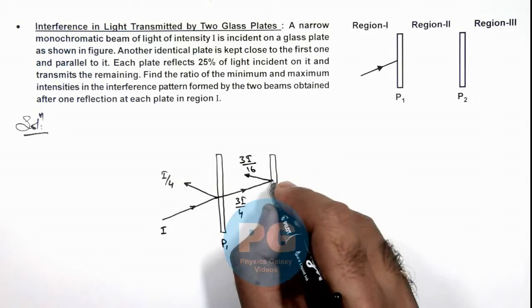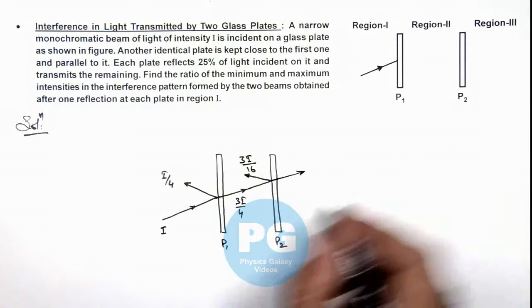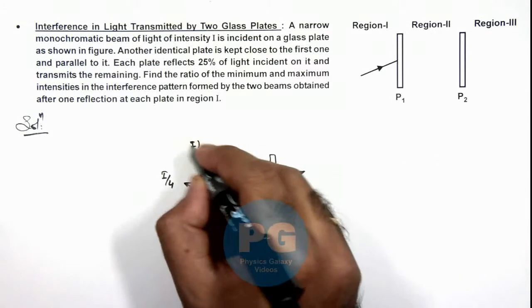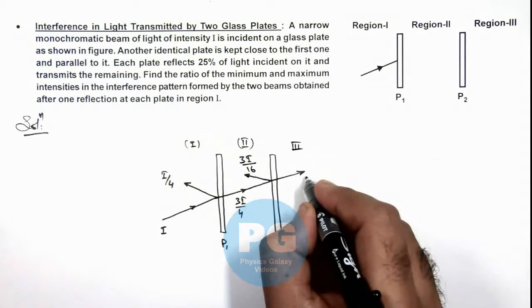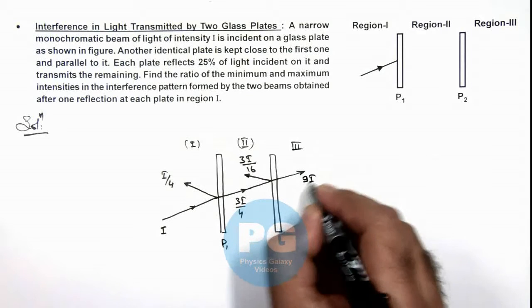And 75 percent will pass on to region 3. This is region 1, this is region 2, and this is region 3. So this intensity will be 9I/16.